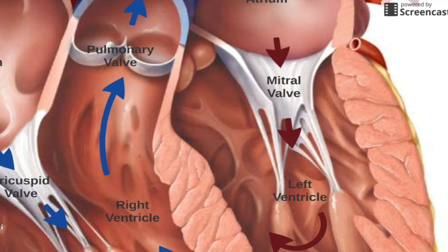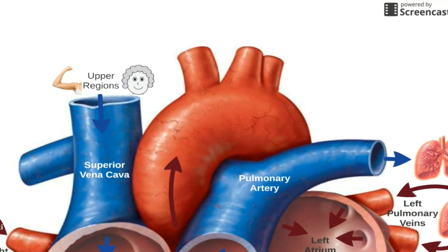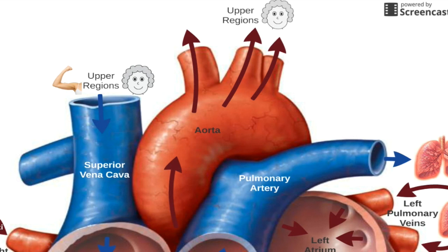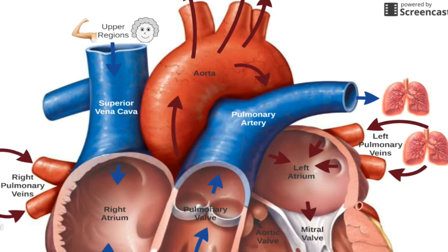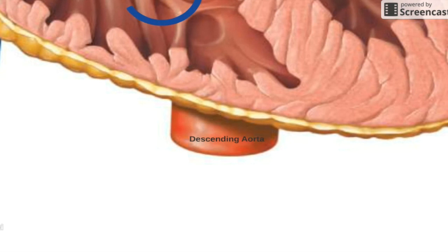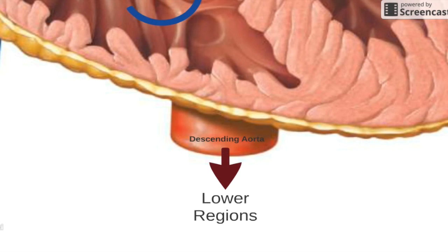When the mitral valve closes, the blood encounters yet another valve called the aortic valve. The valve opens and oxygenated blood flows into the aorta. From the aorta, the blood can flow toward the upper regions of your body like your head and your arms, or it can flow downward through what we call the descending aorta. The descending aorta has arteries branching off of it that carry blood to the lower regions of your body, like your legs and your torso.